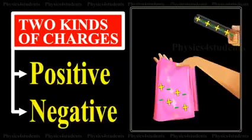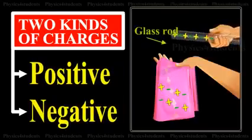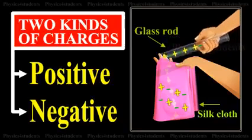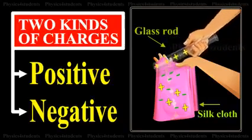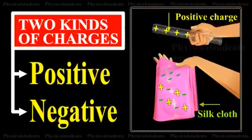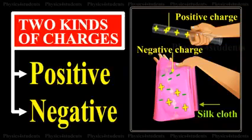First of all, if a glass rod is rubbed with a silk cloth, it acquires positive charge, while the silk cloth acquires an equal amount of negative charge.